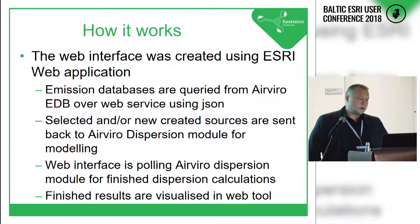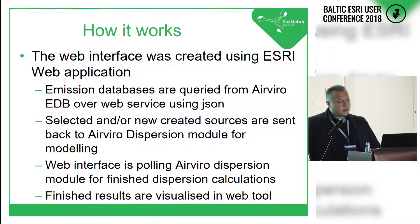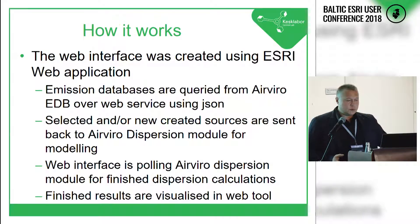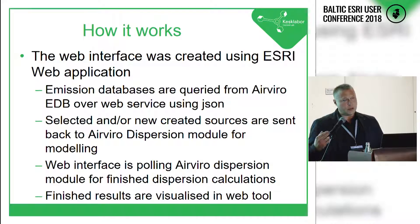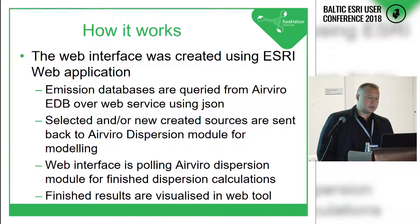AirViro sends those source data back to the web application. In the web application, you can select certain sources and send them back to AirViro to make the calculations. AirViro then runs the dispersion model, produces results, and the web application polls for this result. It is then possible to visualize these results on the map.